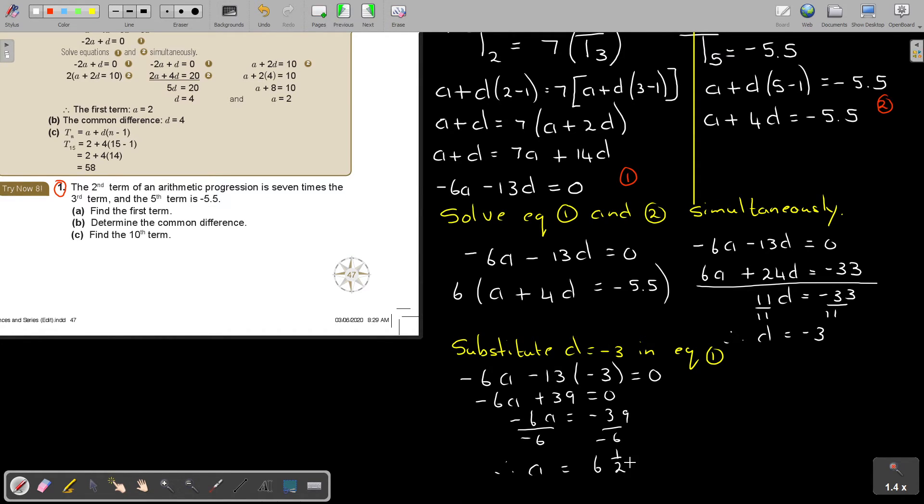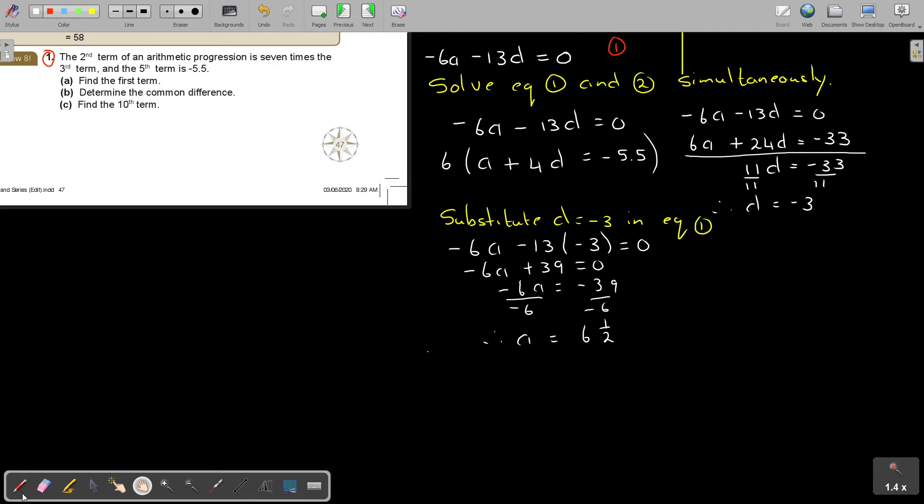So number A, the first term is 6 and a half. Let's see, number B, the common difference, the common difference, that's D, is negative 3, and now I'll find the 10th term.